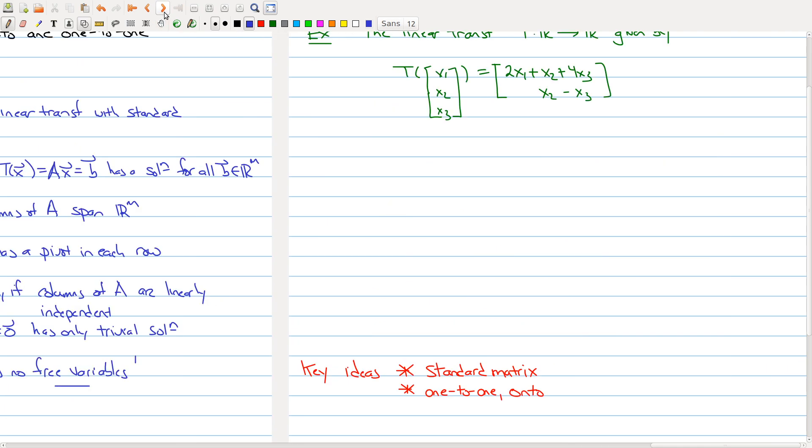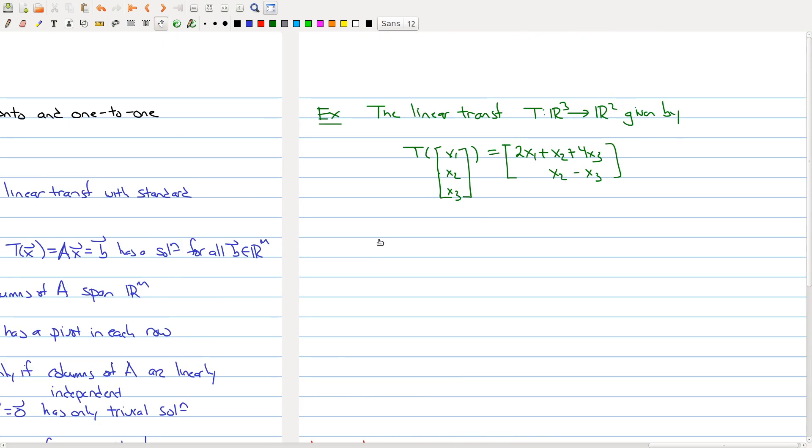So I thought I would end off today's lecture with just a quick example of how this works. So here I have a linear transformation that takes a vector in R3 to R2 using the following formula. So it takes the vector x1, x2, x3 to 2x1 plus x2 plus 4x3 in the first coordinate and x2 minus x3 in the second coordinate.